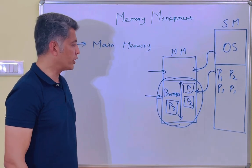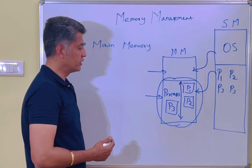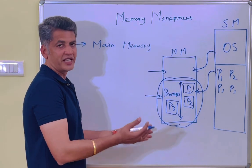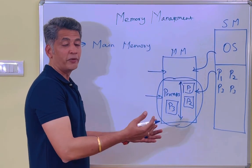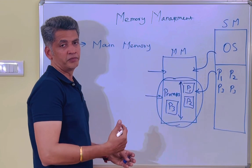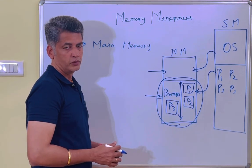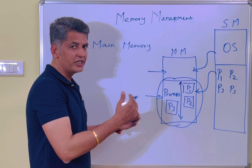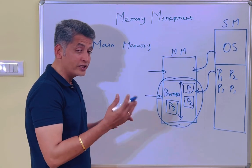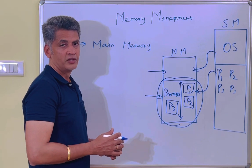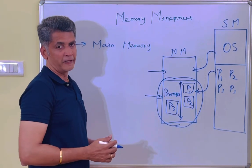Here we are going to talk about how the partitions may work — variable size partition or fixed size partition. Also, what type of difficulties may come if the partitions are there. Here we need to discuss about contiguous memory allocation and non-contiguous memory allocation — these are the two different types of allocation inside the main memory.